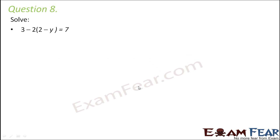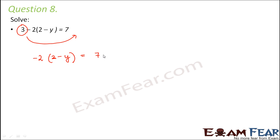Question number 8: 3 minus 2 into (2 minus y) is equal to 7. The first term we will shift is the constant 3. Moving 3 to the right hand side, it becomes minus 2 into (2 minus y) is equal to 7 minus 3, which is 4.